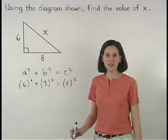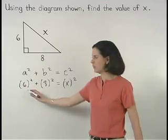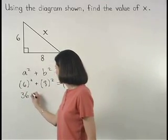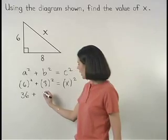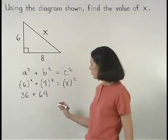Solving from here, 6 squared is 6 times 6 or 36, and 8 squared is 8 times 8 or 64.